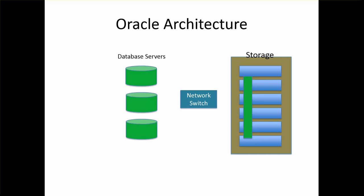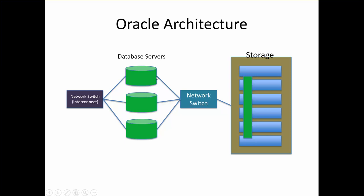These things are connected with a network switch, which will be used whenever we need to read data from a table by issuing a query. For private interconnect, you will have another network switch. So typically Oracle databases will have three network switches: one for private interconnect, one which connects your database servers and storage, and a third for public connectivity. This green vertical rectangle, which is part of the storage layer, will be mounted on all these database servers so that they can read data by issuing queries via tables.